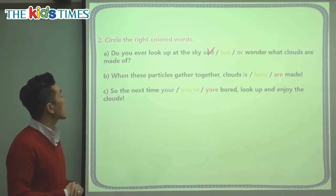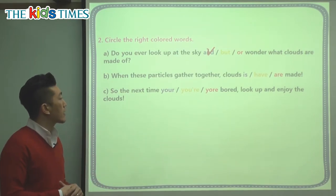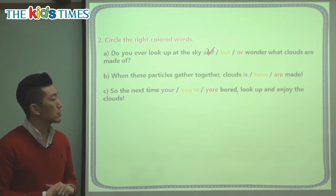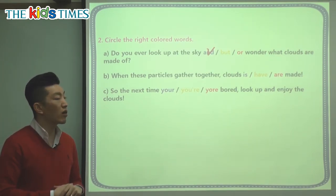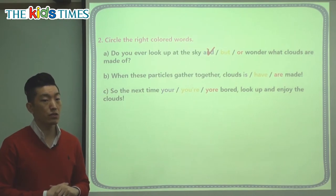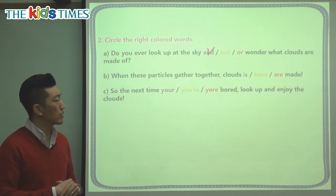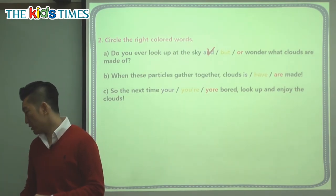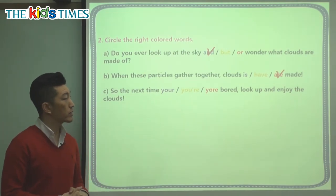Let's look at the second one. When these particles — the tiny pieces — gather together, clouds is / have / are made. We know it's plural, more than one cloud, so it's not is. Clouds have made sounds odd. The correct answer is: clouds are made.